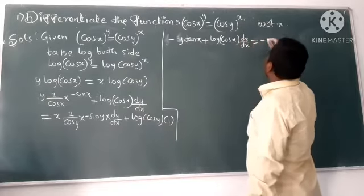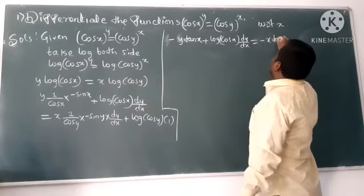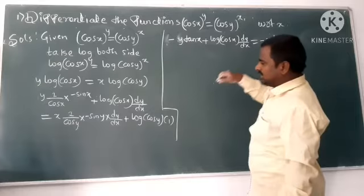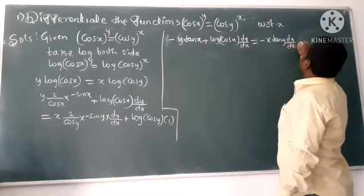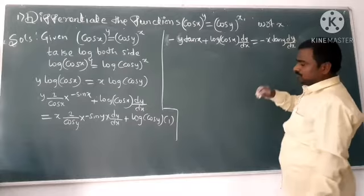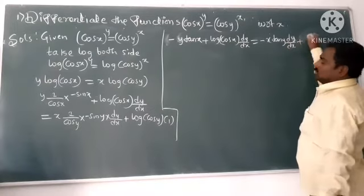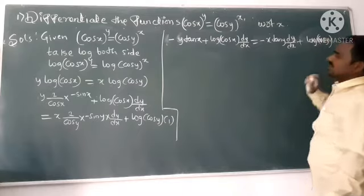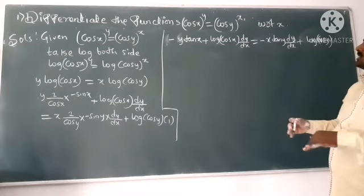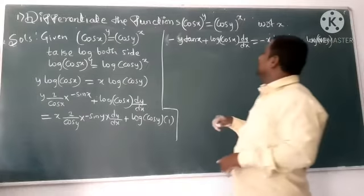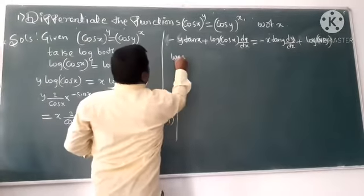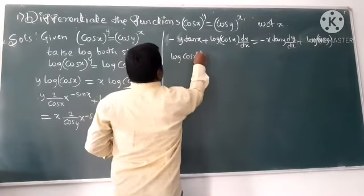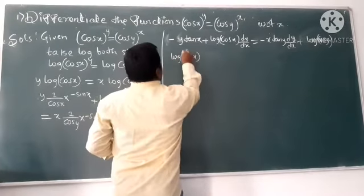Here x is constant, so -x tan y dy/dx plus log(cos y). We'll change: put constants on one side, derivatives on the other side.